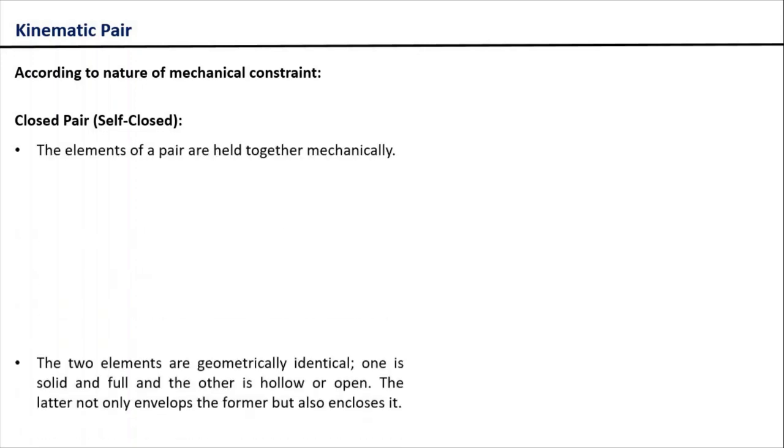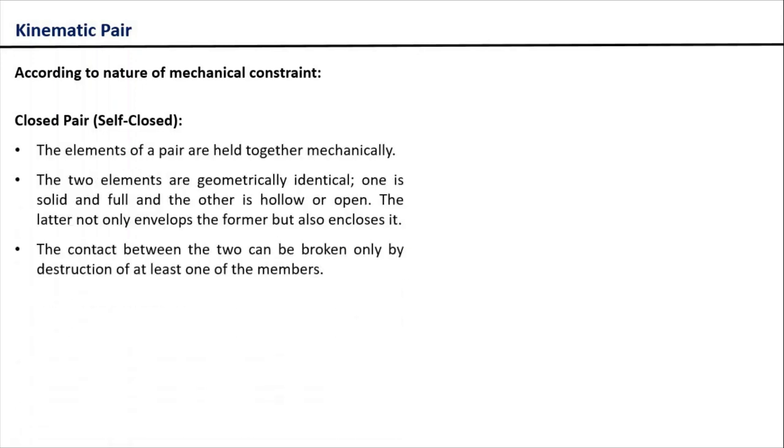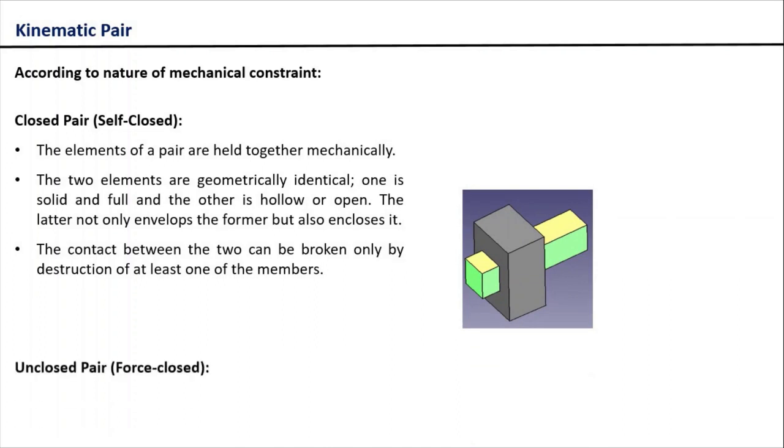There are two categories: one is closed pair, another is unclosed pair. So let us see what is a closed pair and what is an unclosed pair. In a closed pair, the elements of kinematic pair are held together mechanically.